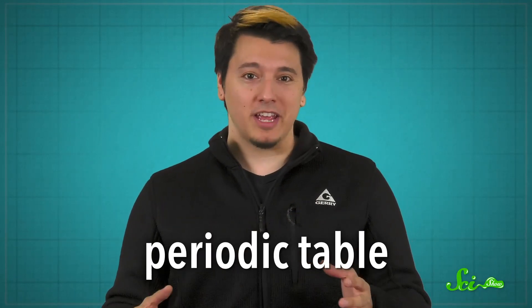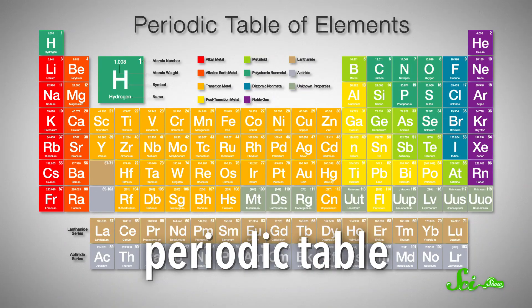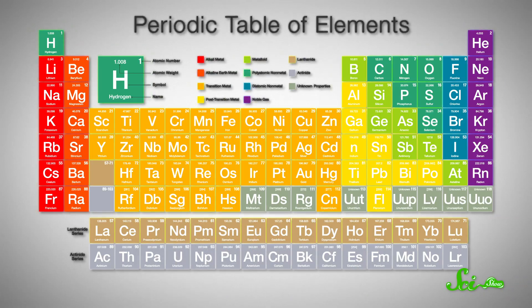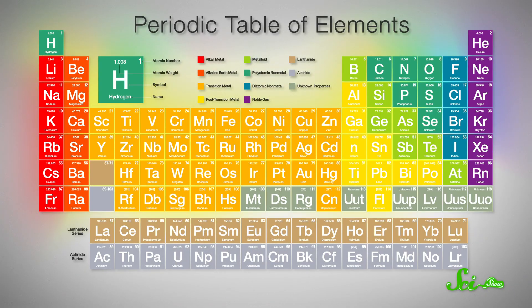At its heart, science is about finding patterns in the world and explaining why they happen. Every field has them, but few patterns are as well-known or as useful as chemistry's periodic table. In fact, it's so ubiquitous that we often think of a single, universal periodic table.